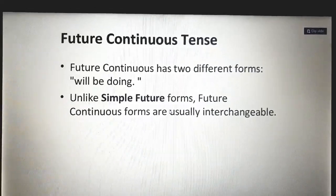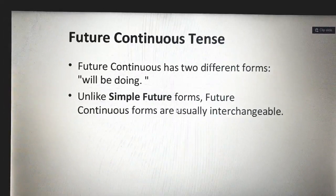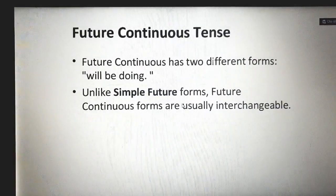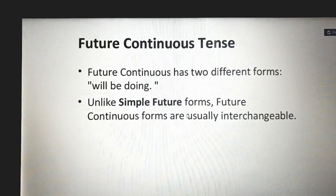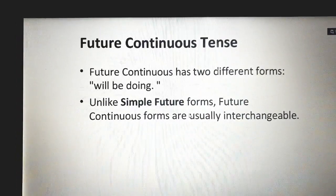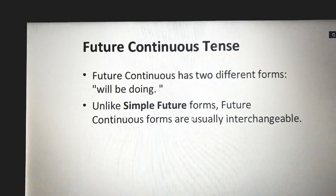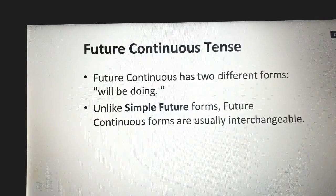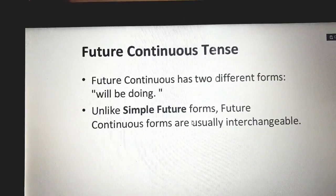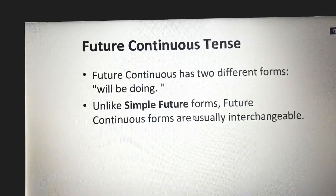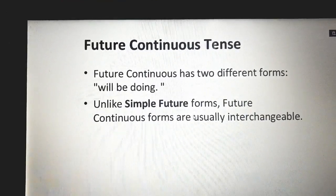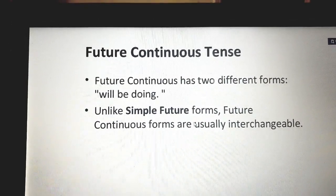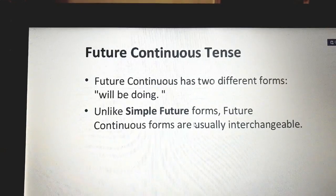Hello, students. As you remember in a previous lesson, we talked about the future tenses and we said that we have four types of future tense: future simple, future continuous, future perfect, and future perfect continuous. In this lesson, we are going to discuss what a future continuous tense is, how we use it, when we use it, and how we form it.